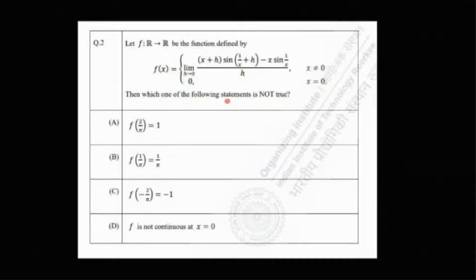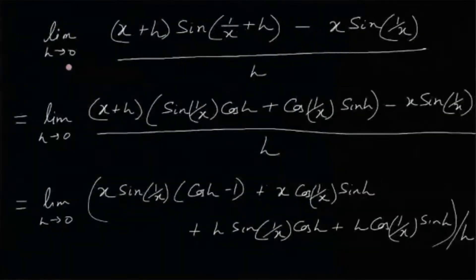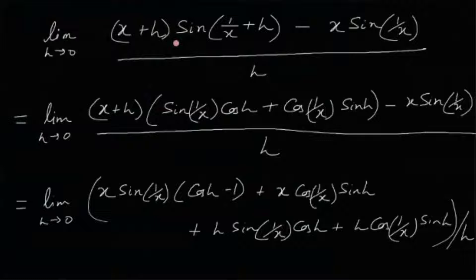Now this function is obviously in the form of a limit. So let us try to evaluate this limit first. It seems complicated but it actually is easy, very easy. So limit h tending to 0, (x+h)sin(1/(x+h)) minus x sin(1/x) all divided by h.